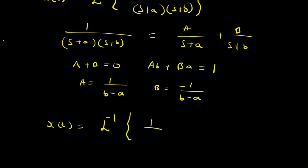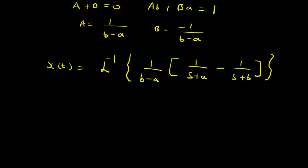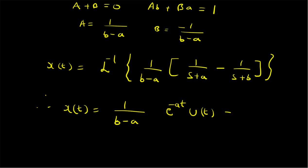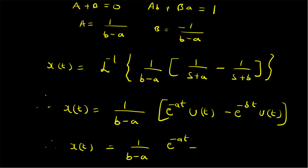And B = -1/(b - a). Therefore x(t) = inverse Laplace transform of 1/(b - a) · [1/(s + a) - 1/(s + b)]. From step one we already know that the inverse Laplace transform of 1/(s + a) is e^(-at) · u(t), and similarly the inverse Laplace transform of 1/(s + b) is e^(-bt) · u(t). Therefore x(t) = 1/(b - a) · [e^(-at) · u(t) - e^(-bt) · u(t)].